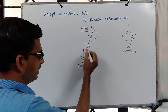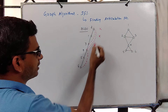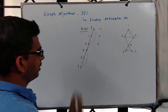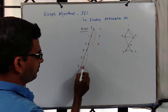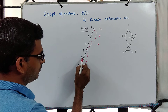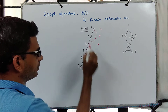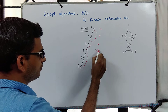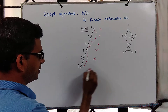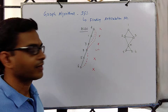For vertex 3, there is a descendant connected to the ancestor, so it is not an articulation point. Look at 4: there are back edges incident on it, but no back edge from 5 or 6 to some ancestor, so 4 is an articulation point. Vertex 5 is not, and vertex 6 has no descendant, so 6 is not an articulation point.